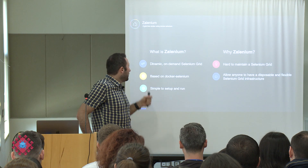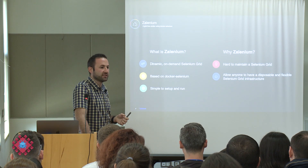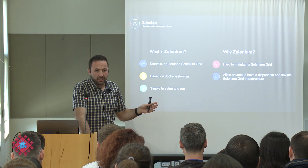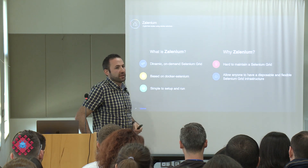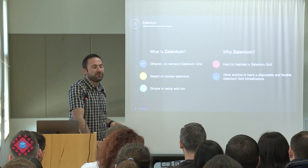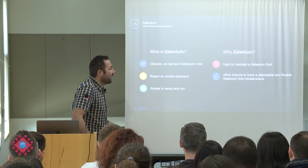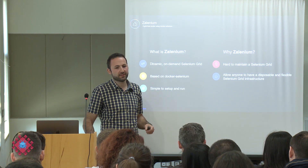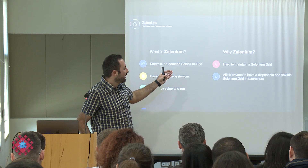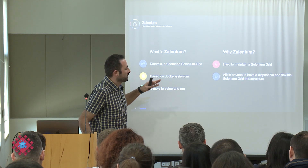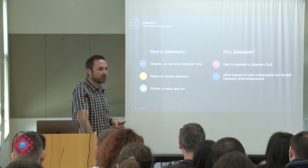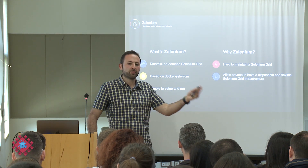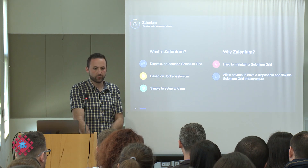What is Selenoid? It's an on-demand, dynamic Selenium Grid that creates and destroys nodes on the spot. It's based on the Docker Selenium images I mentioned in previous slides and is very simple to set up. Why Selenoid? Because the original Selenium Grid has poor performance and is hard to maintain. Selenoid allows you to have a flexible Selenium Grid — you don't need to create nodes yourself; you just request the capability and nodes are created on the spot for you.